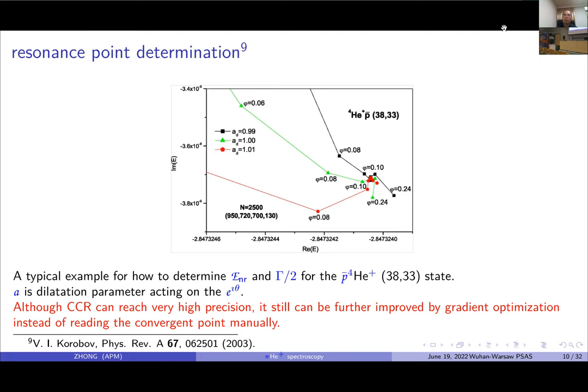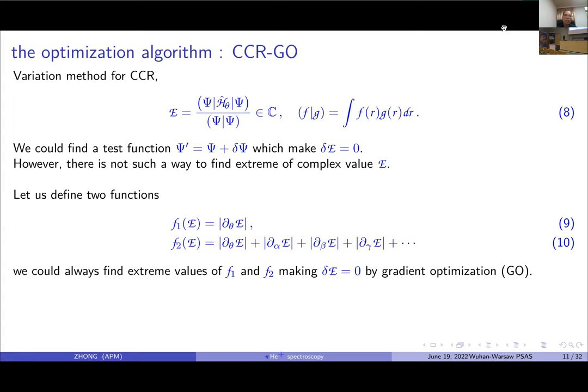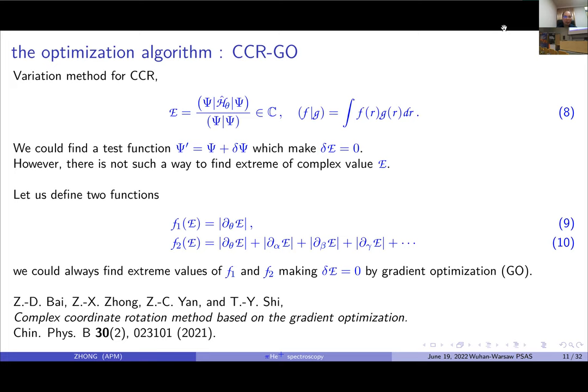We developed a new optimization algorithm for CCR method by using the variational method. Since the complex value, there is no such way to find extreme value of complex energy. We defined these two functions to find the extreme value of these two functions, making the variation of energy to be zero by gradient optimization. This algorithm has been published last year in Chinese Physics Letters.